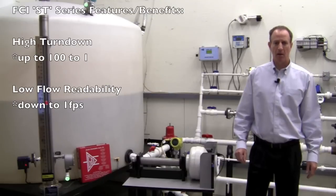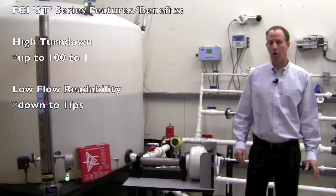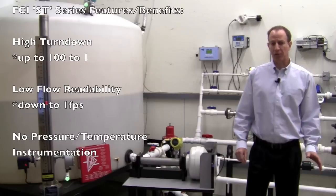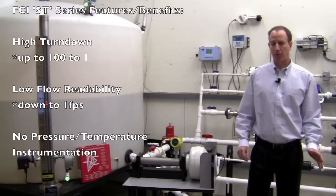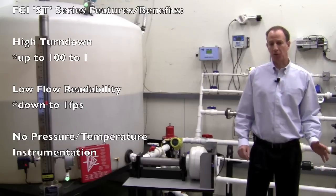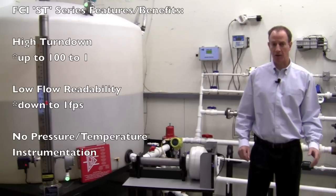Low flow capability. The gas flow sensor can measure down to one foot per second. No pressure or temperature compensation required. To get true mass flow, differential pressure and vortex flow meters require pressure and temperature compensation. This increases both hardware and installation costs.